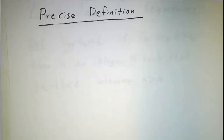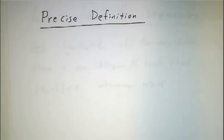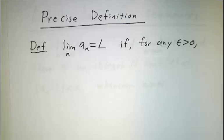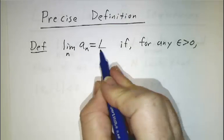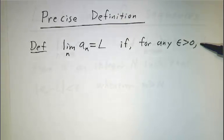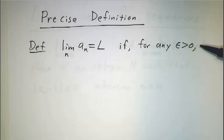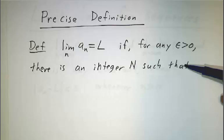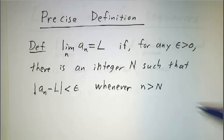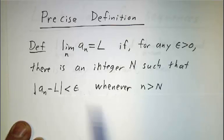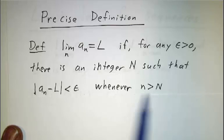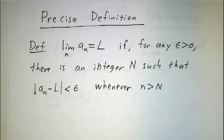The precise definition of convergence is that we say this limit is L if for any epsilon — so you tell me how close you want to be. If you want to be within a tenth, then epsilon is a tenth. If you want to be within a millionth, then epsilon is a millionth. For any epsilon, there's an integer N such that after the first N steps, you are within epsilon of L.